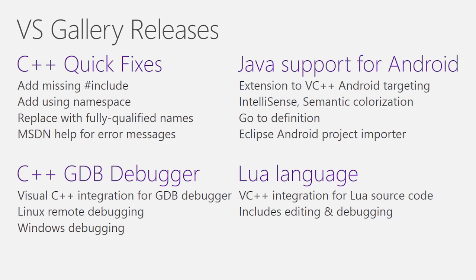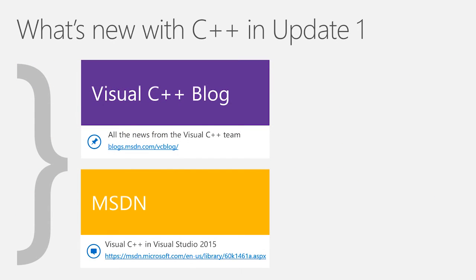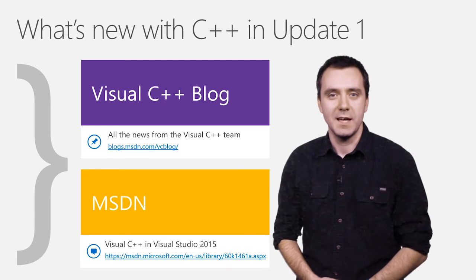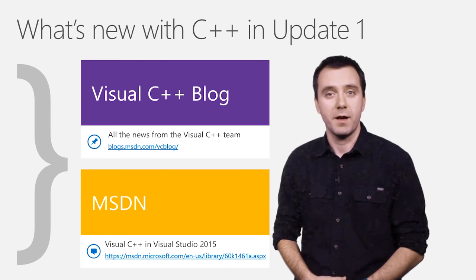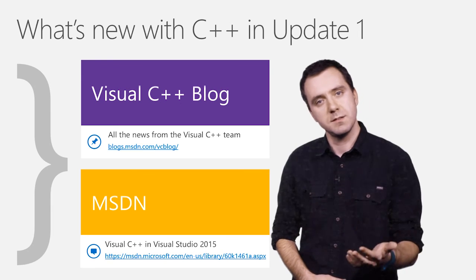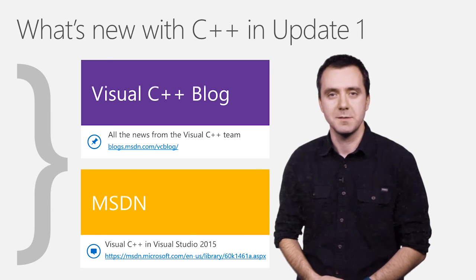And last but not least, with the Lua extension, you can now add Lua files in your Visual C++ project and benefit from colorization and IntelliSense, as well as being able to debug your Lua code. That summarizes the improvements made to Visual Studio 2015 in Update 1. For more in-depth information about each of these, check out our VC blog as well as the new MSDN topic describing Update 1 functionality. Thank you for watching, and thank you for trying Update 1. We look forward to your feedback through Send a Smile, Connect, UserVoice, or in-blog comments. Have a good day.